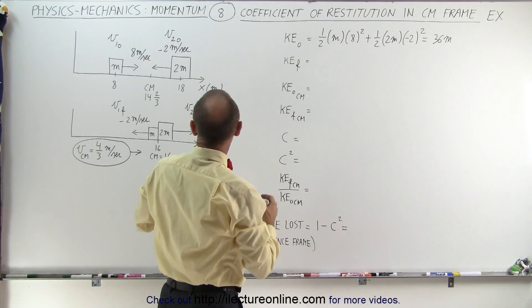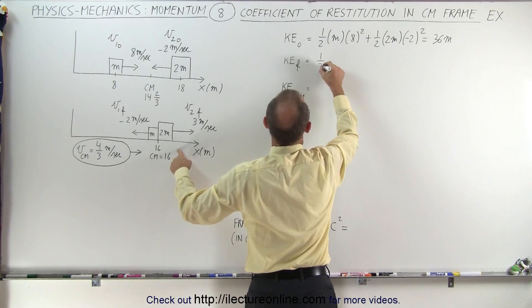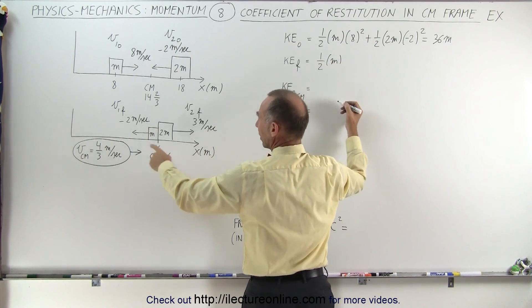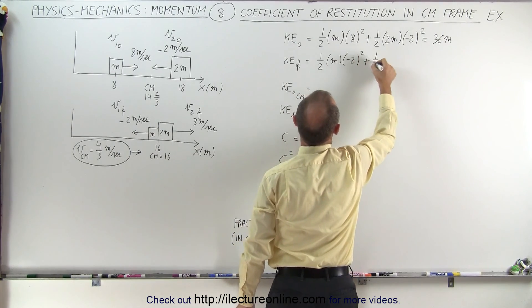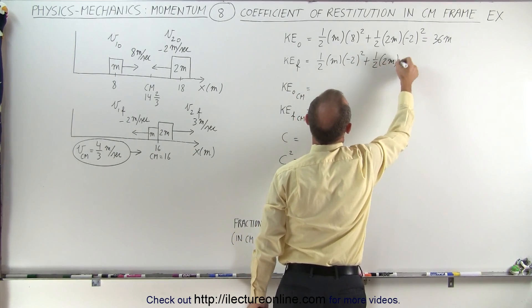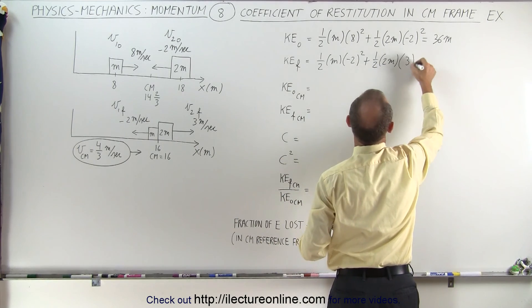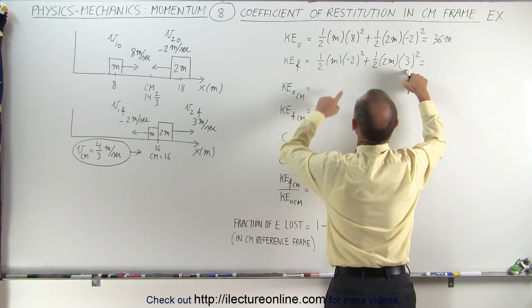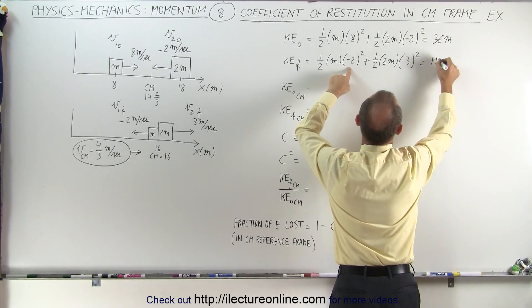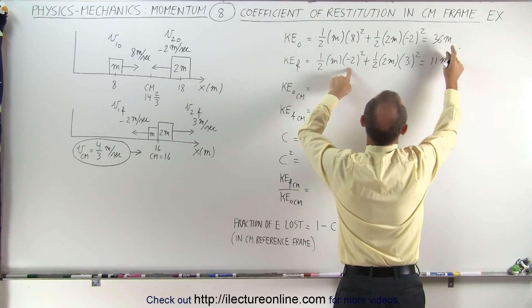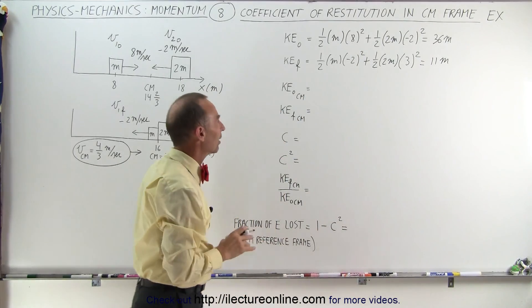The final kinetic energy after the collision is one-half times m times (minus 2) squared, plus one-half times 2m times the final velocity squared. That gives 9 plus 4 divided by 2, which is 2, so 9 plus 2 equals 11m. That's the before and after kinetic energy relative to a stationary Earth.